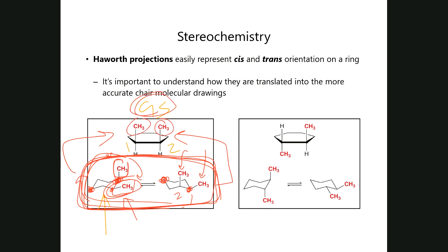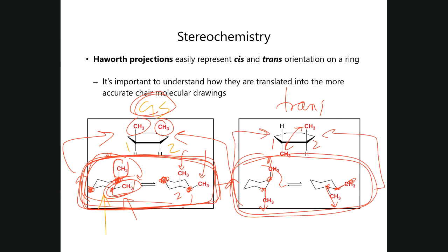If it's a trans arrangement — notice these are in opposite directions — one's up, one's down — that's a trans compound. When the chair flips, you have this one up and this one down — they now both become equatorial. So these two can technically be represented in this Haworth projection. When we start looking at sugars, we're primarily going to concentrate on Haworth type projections because that's the most common way sugars are presented. But there will be occasions in which a chair form may show up, and you just need to be clear on how these two are represented and what that means.